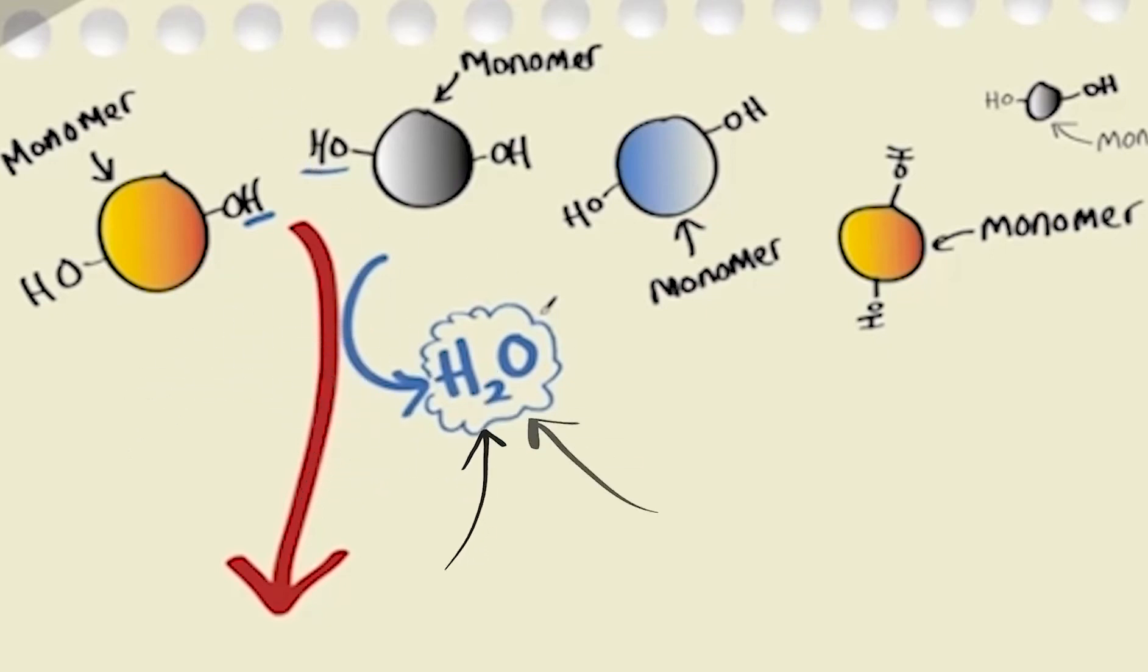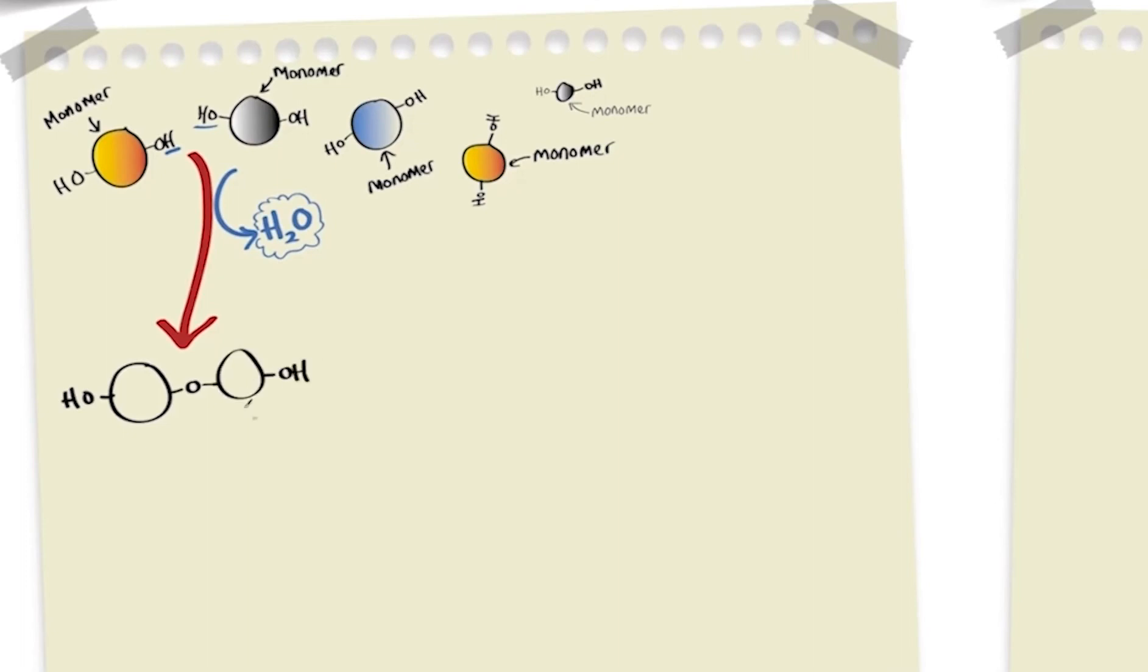That water molecule is removed as we now join these two monomers together. And as we can see here, the monomers have joined together, resulting in the formation of a covalent bond that links them together. Let's continue by adding another monomer here.